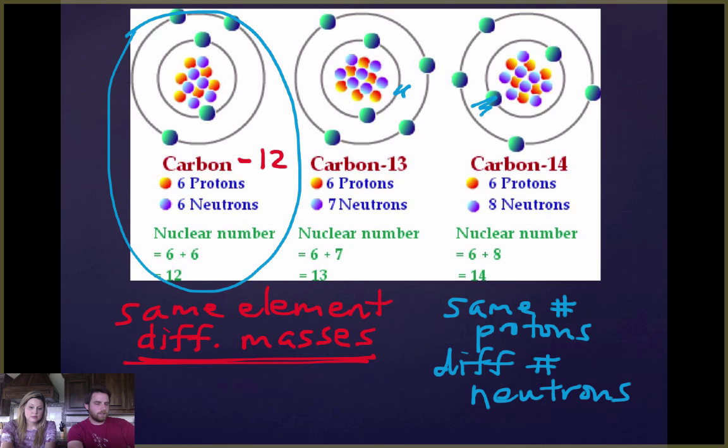So isotope is a pretty easy thing to understand, I would say. And it just kind of helps you realize that just because you have an atom of carbon doesn't necessarily mean that you know exactly what its mass is before you look at its parts. Okay, that's it, I guess. Yeah, that's it. Easy.